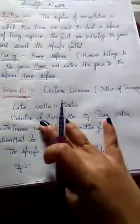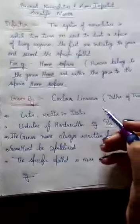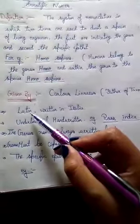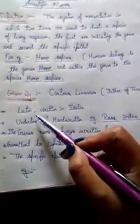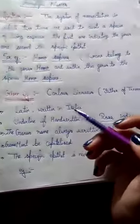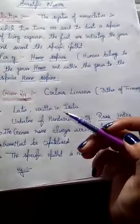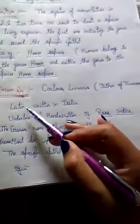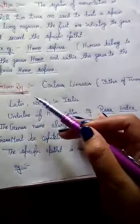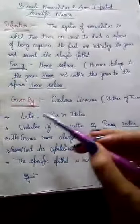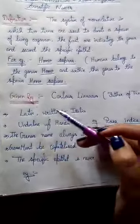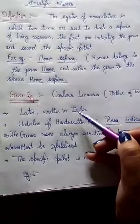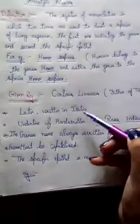There are some rules and principles for binomial nomenclature. First, all scientific names are written in Latin language, because it is a dead language — meaning it cannot change; no further work will be done on it, so there will be no change in it. That is why we write all our scientific names in Latin. If they are printed in books, they have to be in italics.